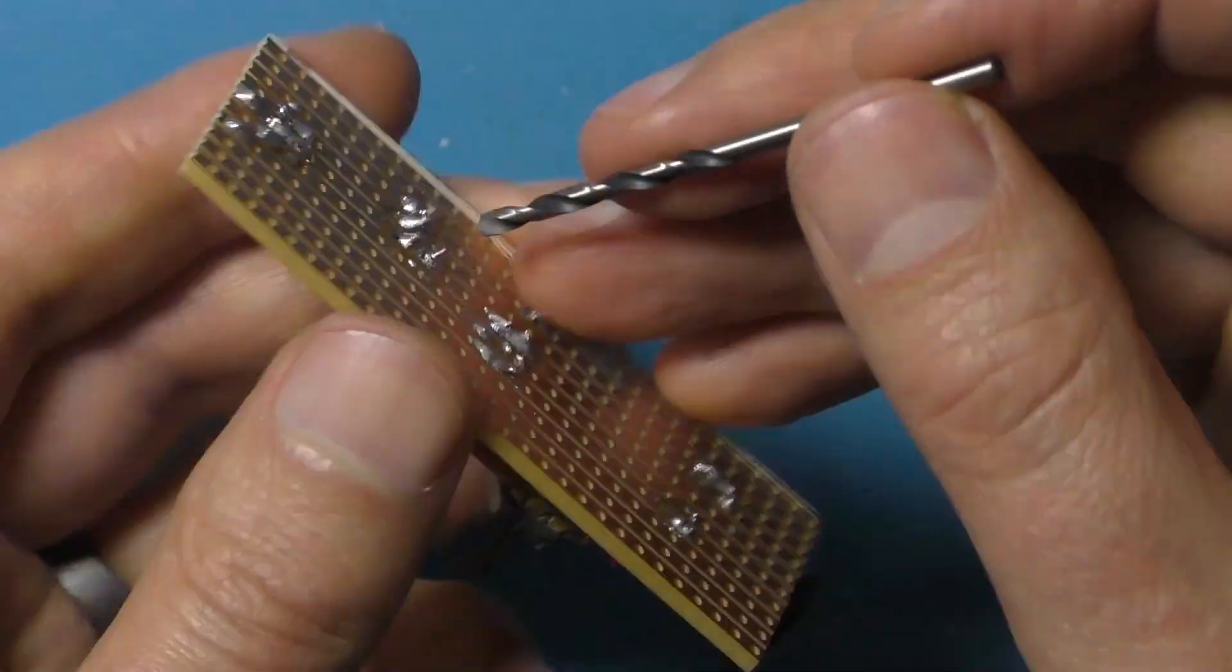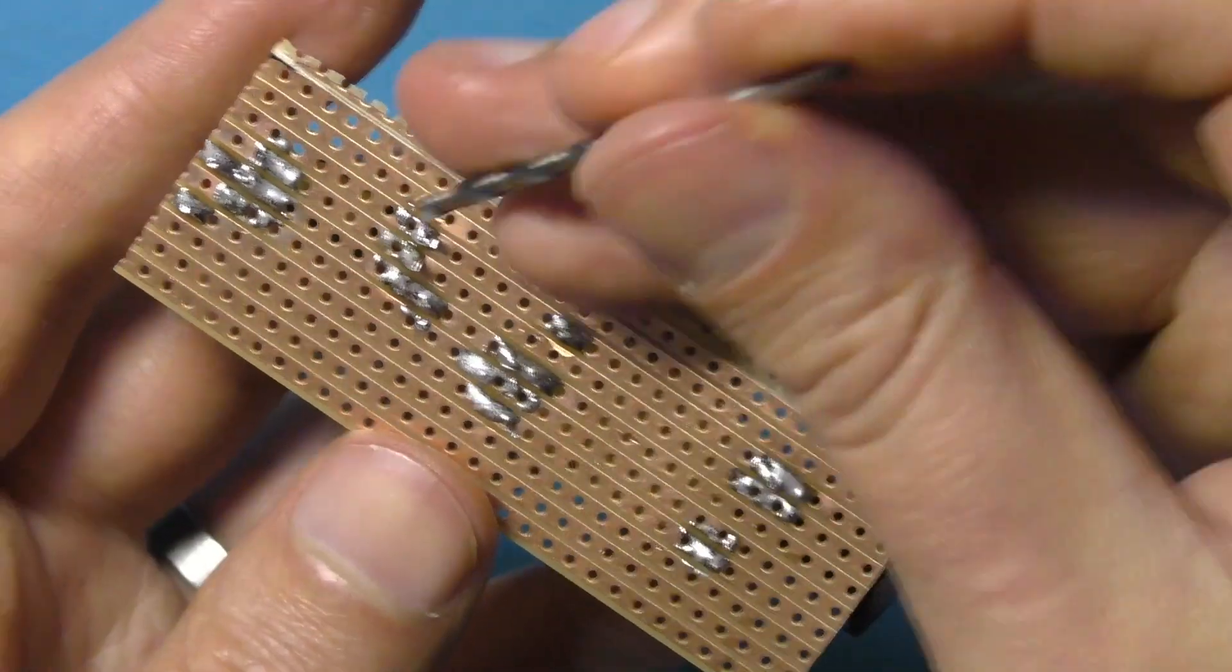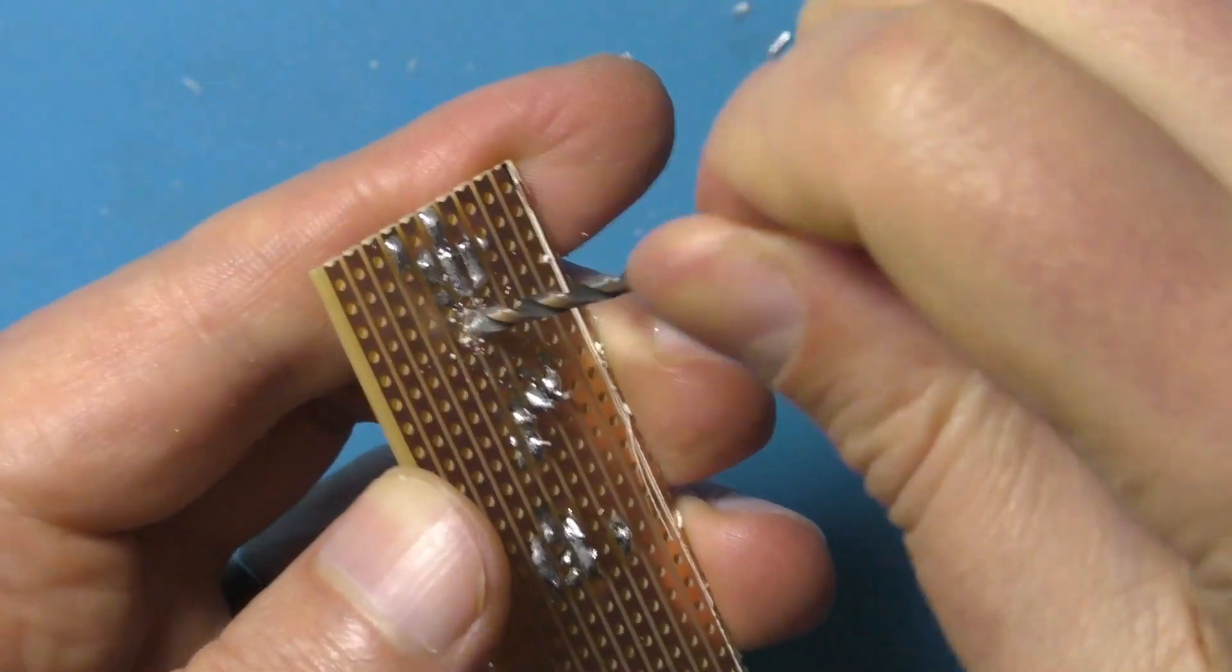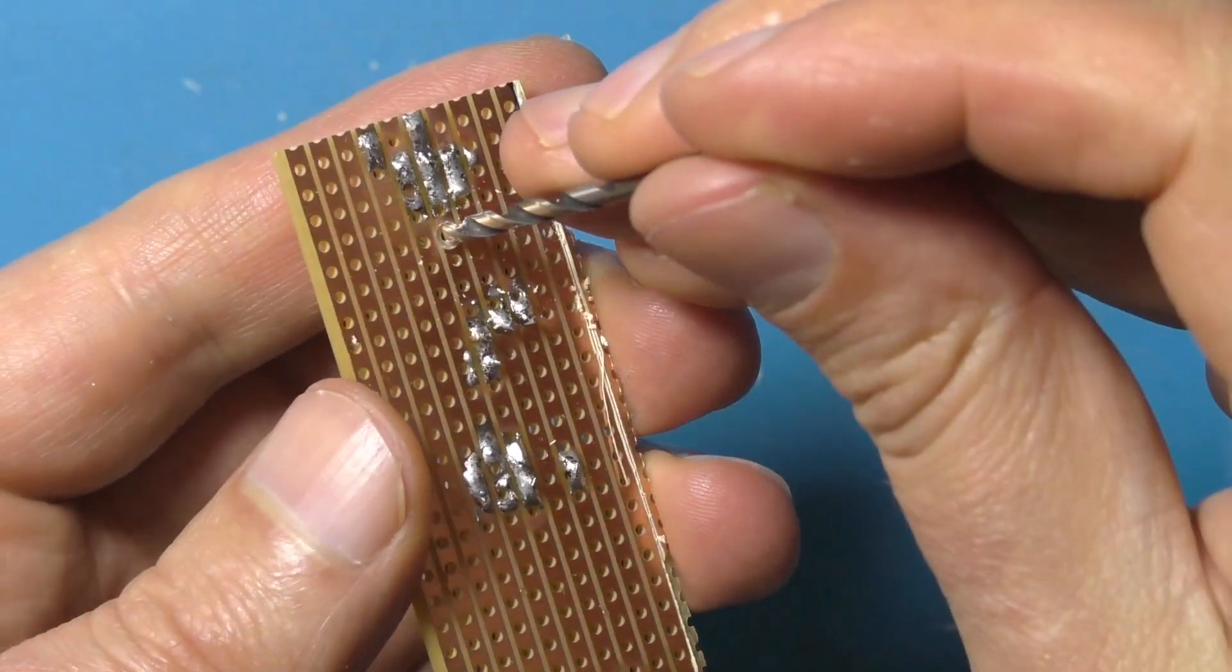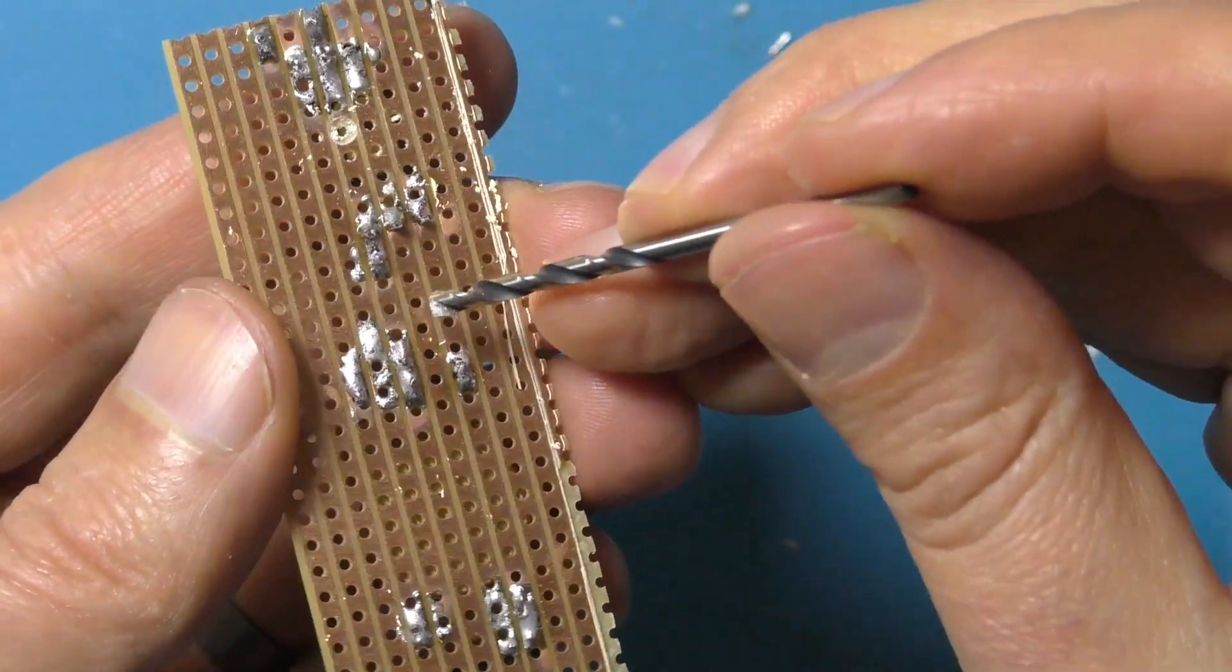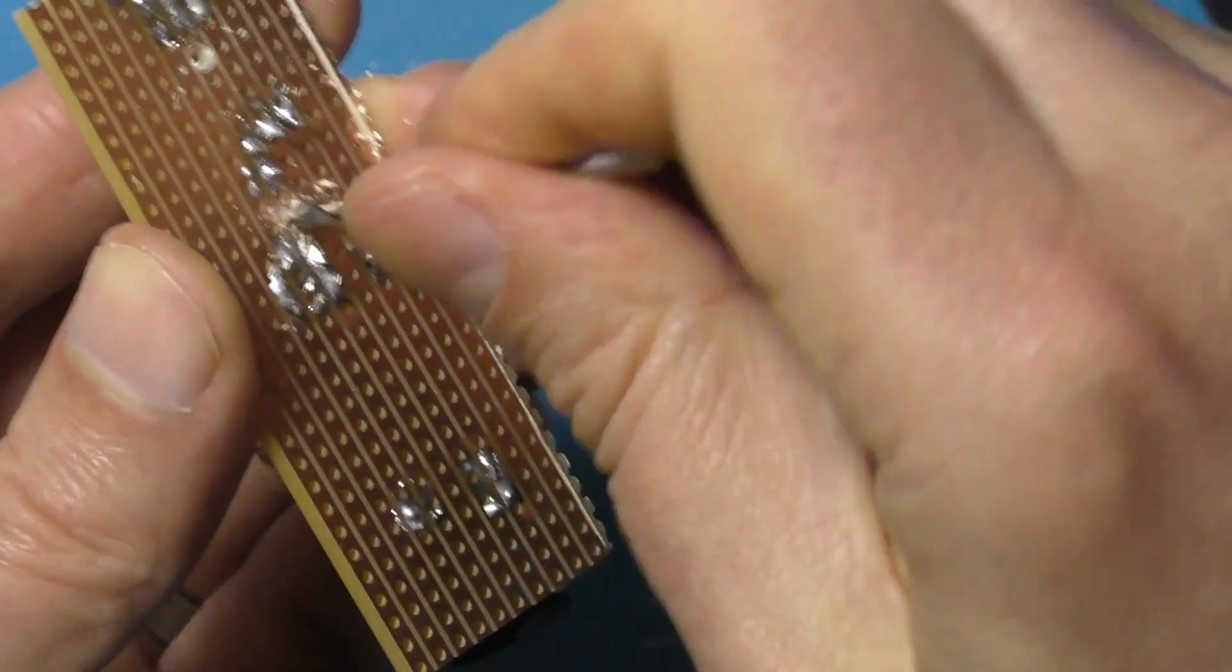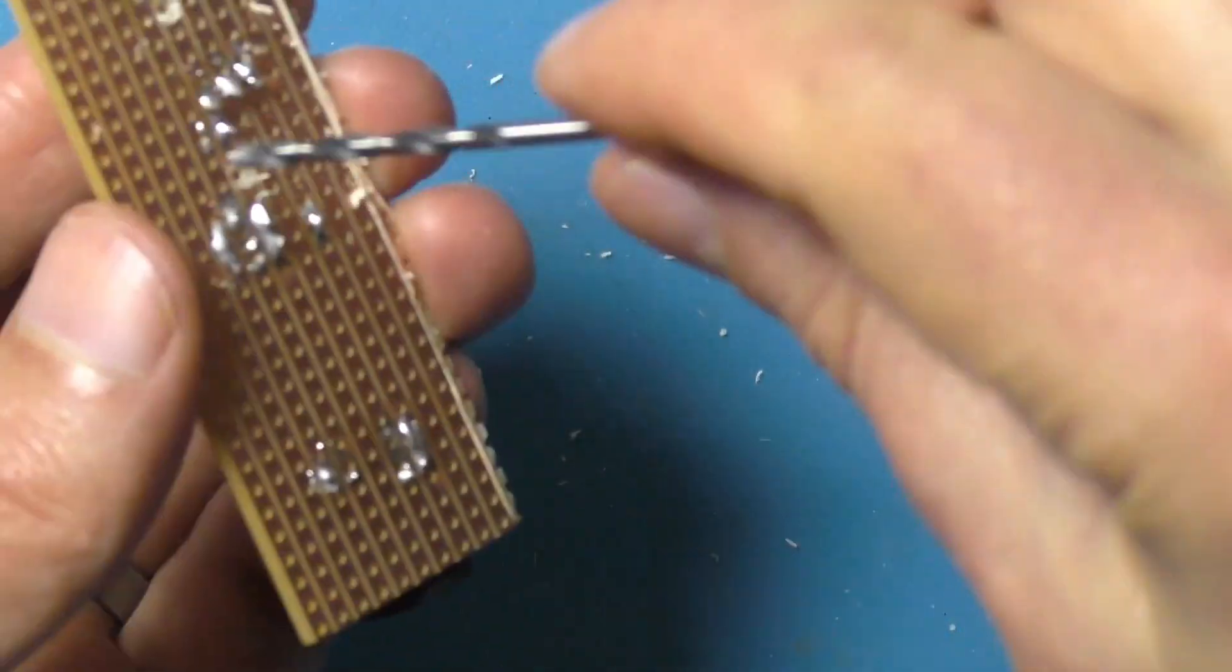And to do that you use a drill bit. You can just do it by hand like this you can just twist it. Give it a good little twist and that wears away at the copper and you can make little breaks in the copper. So for example the one I'm doing here is to make a gap where I've put the resistor in.